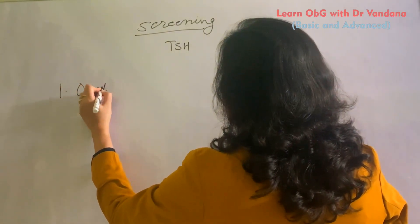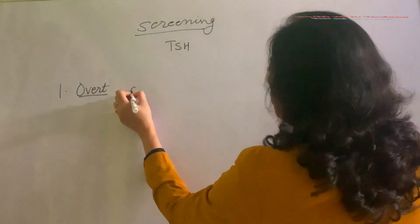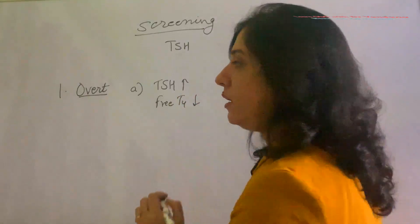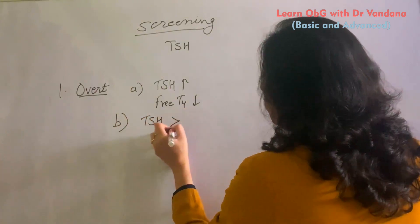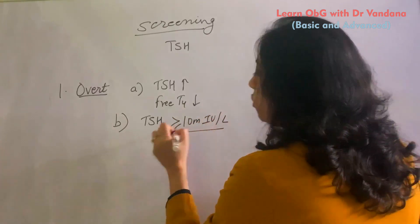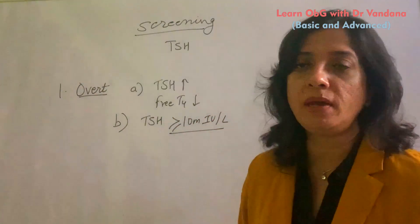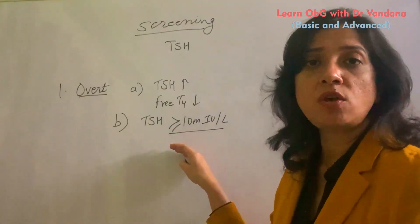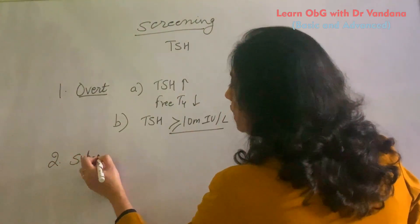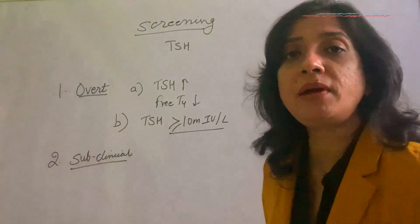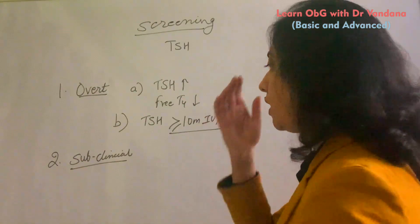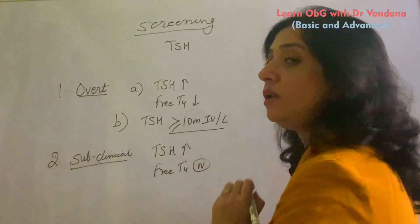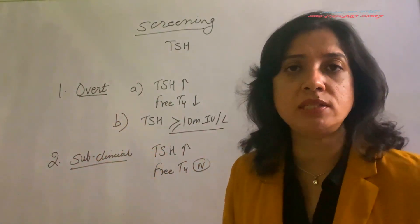The first category is overt hypothyroidism. In overt hypothyroidism, TSH levels are elevated and free T4 levels are reduced. However, if a mother's TSH value is more than or equal to 10 milli-international units per litre, that itself indicates overt hypothyroidism — we do not need to check the T4 values. The second subset is subclinical hypothyroidism: TSH is high but free T4 levels remain within the normal range. These are the two clinical presentations of hypothyroidism during pregnancy.